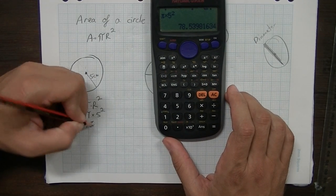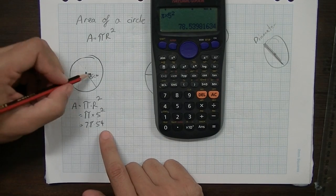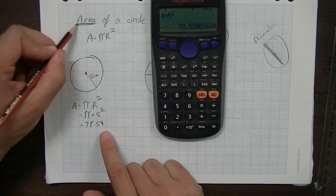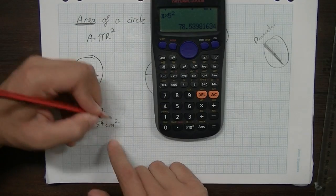That's equal to 78.54, if I round it to two decimal places. And remember, we're finding an area, so the units are going to be squared. It's going to be 78.54 centimetres squared.